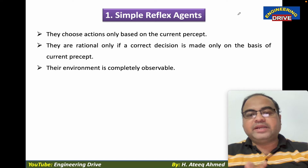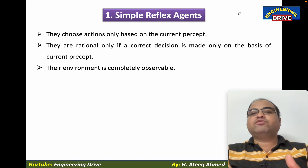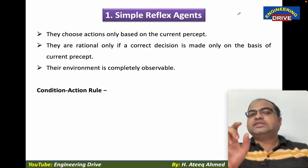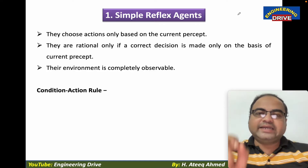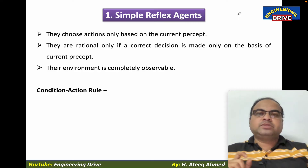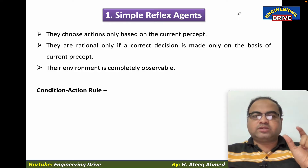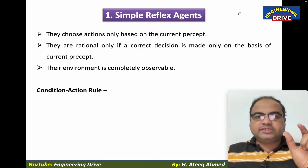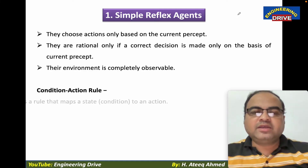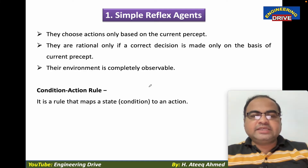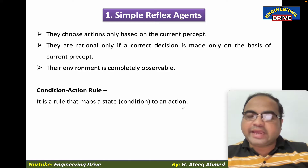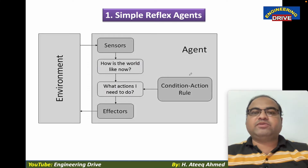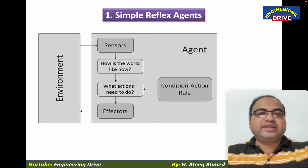Their environment is completely observable. And simple reflex agents follow one rule. We can call this rule the condition-action rule. Based on condition, action will be chosen. This is a condition-action rule — it is a rule that maps a state or a condition to an action. Let me give an example with this diagram so that it will be understood very clearly.